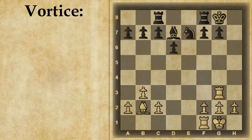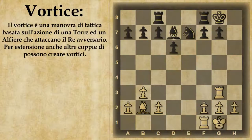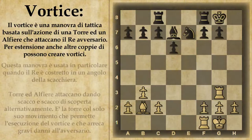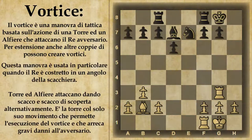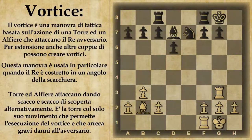Vediamo quindi qual è praticamente la definizione. Il vortice è una manovra di tattica basata di solito sull'azione di una torre e un alfiere che attaccano il re avversario. Per estensione comunque anche altre coppie possono fare vortici. Questa manovra è usata in particolare quando il re è costretto in un angolo della scacchiera, e in questo caso torre e alfiere attaccano dando scacco e scacco di scoperta alternativamente. In pratica è solo la torre che si sposta e libera l'attacco dell'alfiere oppure dà scacco a sua volta, oscillando avanti e indietro.